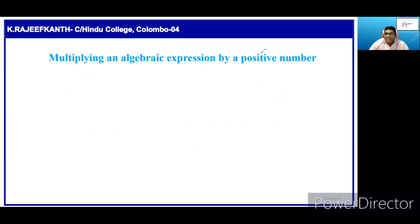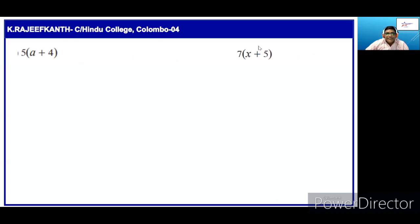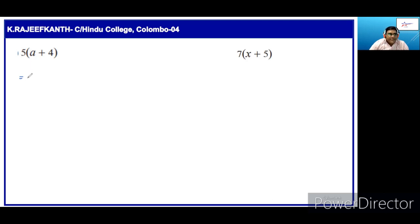So, we will do some more questions. Here, there is a question: 5 into a plus 4. There are two terms, so we have to multiply each term by 5. Then, 5 into a is 5a, plus 5 into 4 is 20.